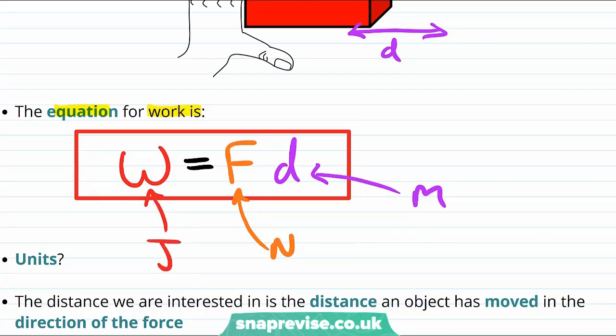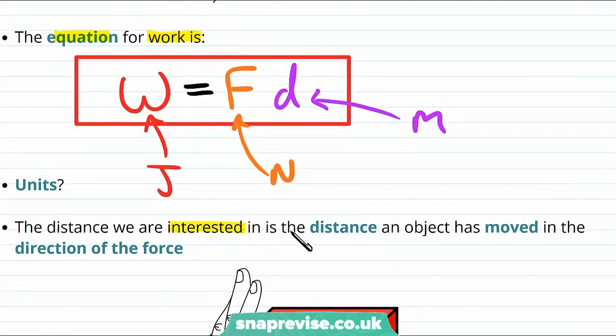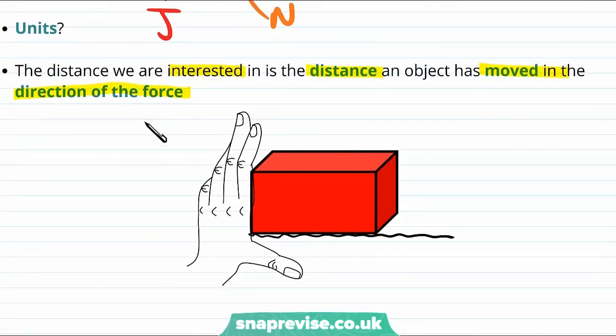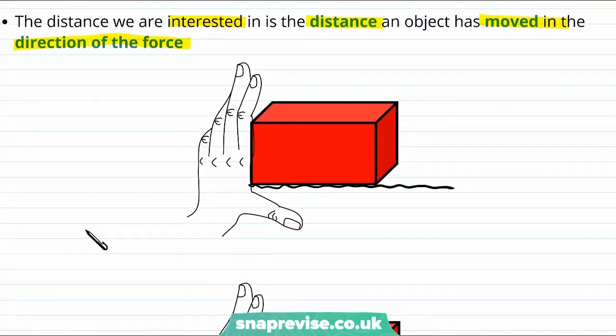Now we must remember that the distance that we're interested in is the distance that an object has moved in the direction of the force. So reminding ourselves of our original example, when we are pushing a block along a table, if we're asking what is the work done by this force, then we multiply that force by the distance the block has moved in that direction. The point I'm going to get to here is that not all forces do work.